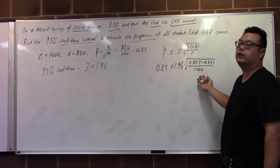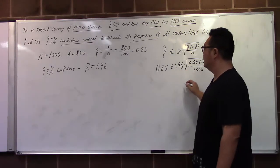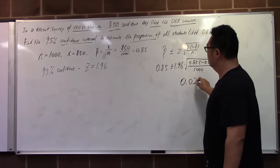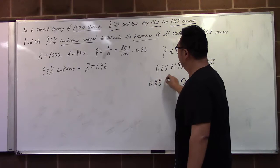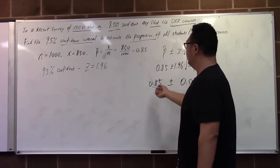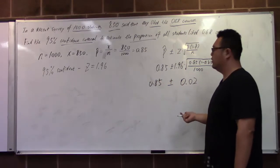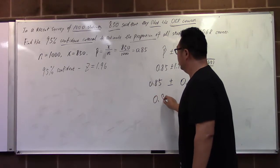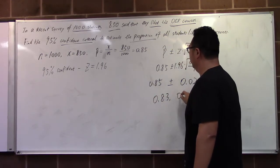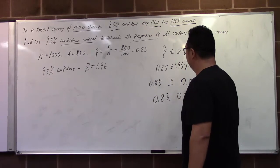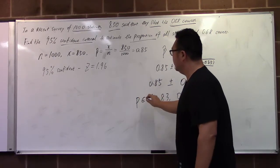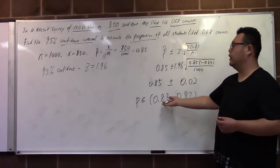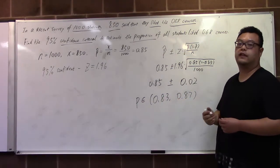We calculate the margin of error first, which is 0.02. Subtracting 0.02 from 0.85 and adding 0.02 to 0.85, we get 0.83 to 0.87. Therefore, the population proportion of students who like OER courses is between 83% and 87%.